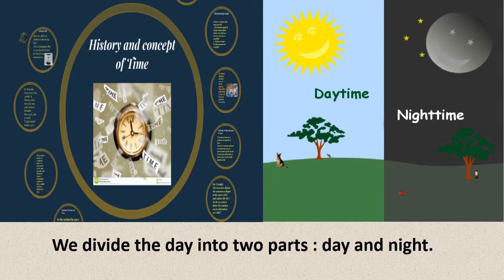The first point is division of time and the timeline. There are different methods of reckoning — that is, calculating — time. Time is continuous, but for our convenience we divide it into periods. The method we use depends on our purpose. For example, at sunrise we say it is morning; at sunset, it is evening; and at the end of the day it becomes dark — it is night. So we divide the day into two parts: day and night.